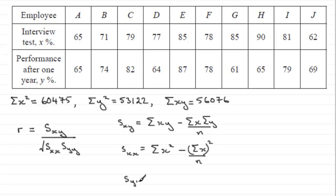And so, for SYY, similarly, it's going to be sum of Y squared minus sum of Y all squared over N.